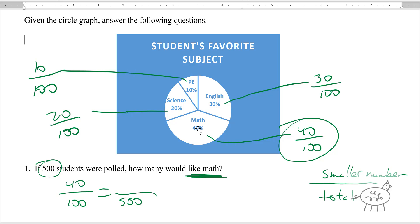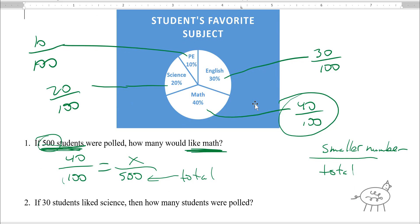And the smaller number, how many like math, that's our variable x. So we just cross multiply. We get 100x equals 40 times 500, which you're going to use your calculator to do that, and you're going to get 20,000. Then you divide by 100, and you get an answer of 200. That's your answer.